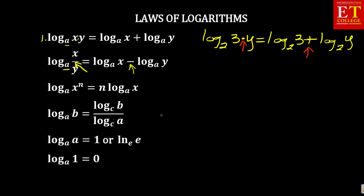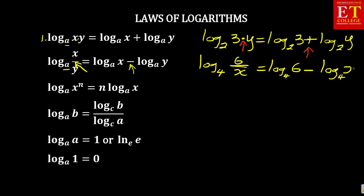For example, if they give you log base 4 of 6 over X, this is the same as saying log base 4 of 6, and because it is a division sign, you put a negative log and maintain the base of 4 of X. That's how you apply the second law.